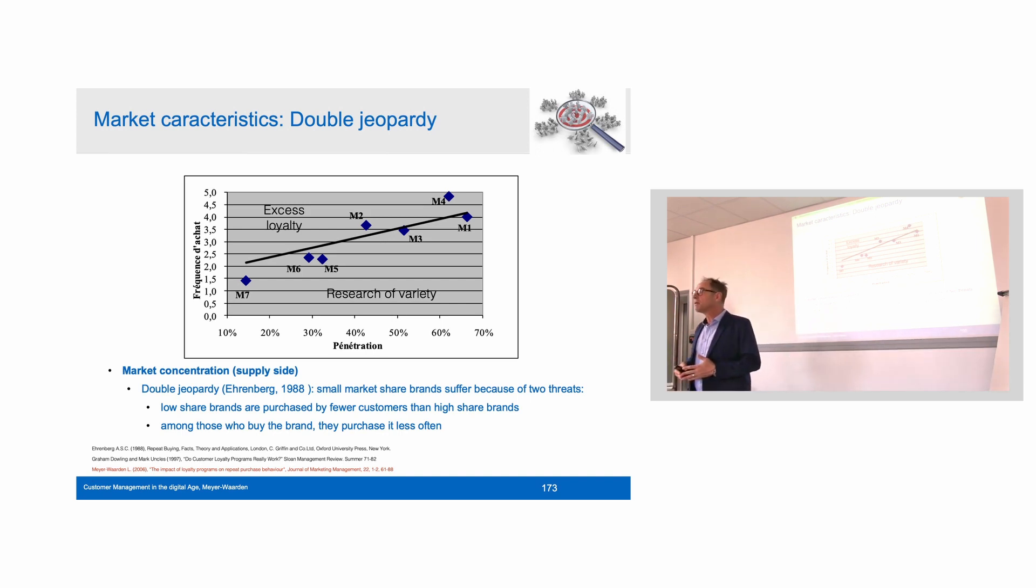This phenomenon has been found in basically all sectors: fast-moving consumer goods sectors, gasoline stations, sitcoms, movies, all kinds of markets. Small brands have a double disadvantage because they have less buyers and these buyers buy less often or are less loyal.